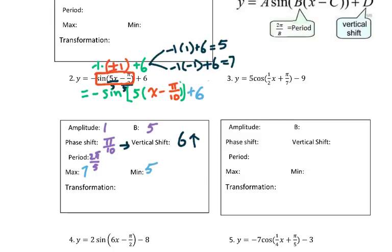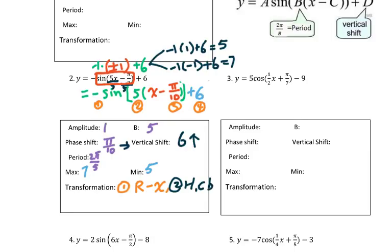For the transformation, label the steps 1, 2, 3, 4. First step: the negative sign means reflect across the X-axis. Second step: it's a liar — horizontally compressed by a factor of 1 over 5. For step 3: it's a liar, so move to the right π over 10 units. For step 4: go up 6 units.